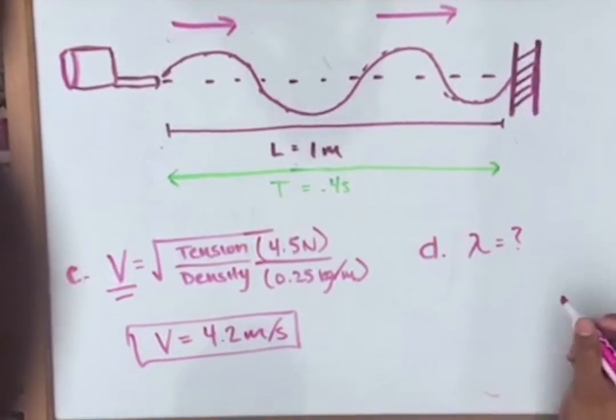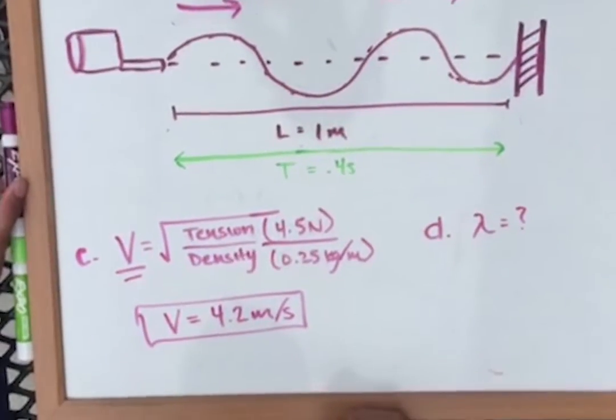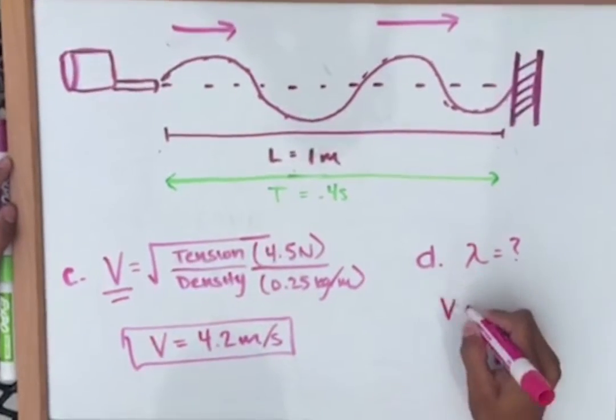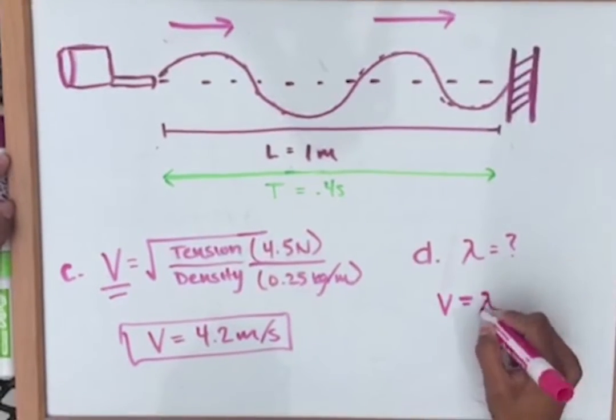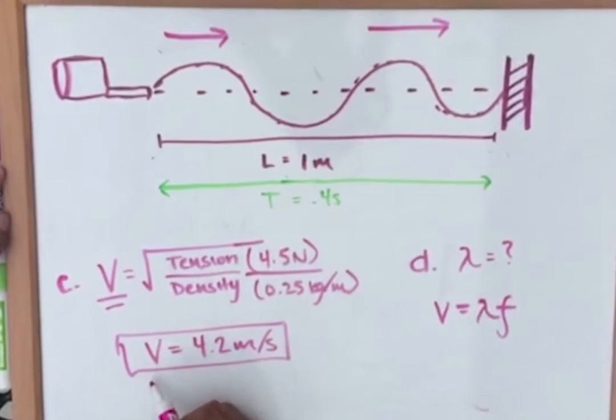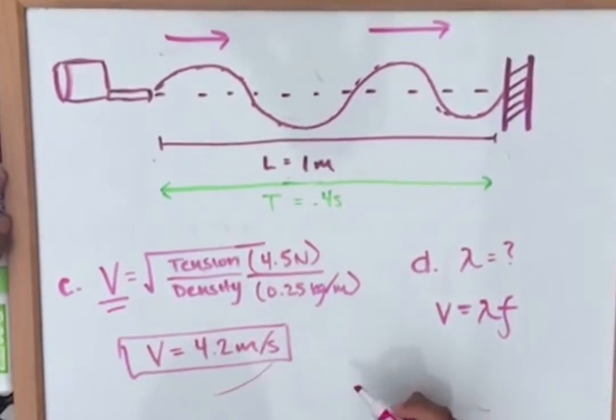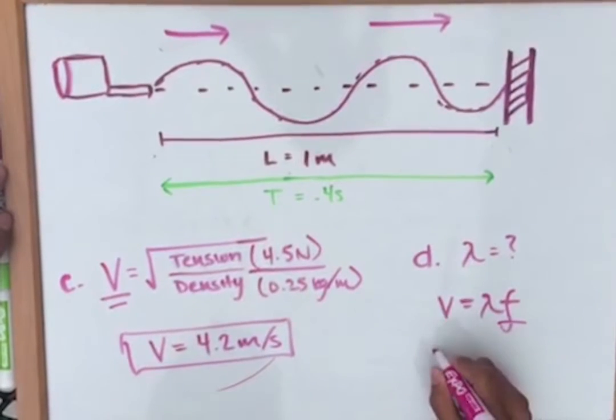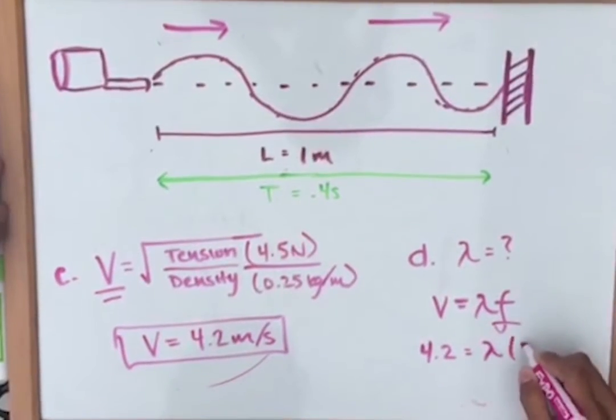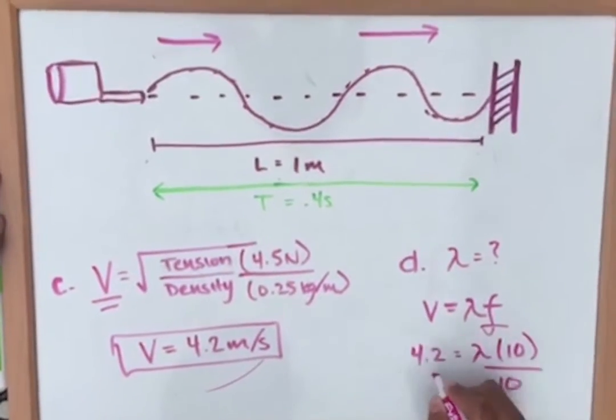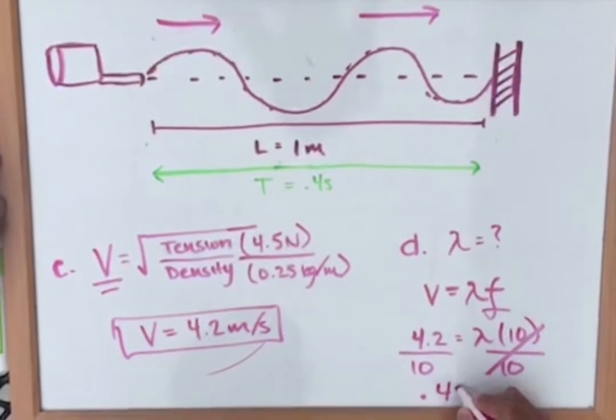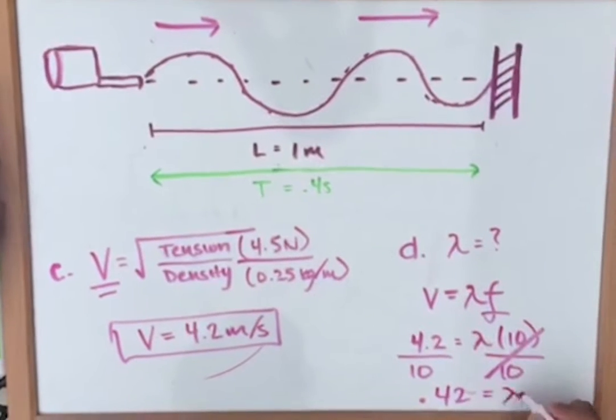For part D, we need to find the wavelength of this string with the given density and tension. So we could use the same equation that we have been using previously of velocity equals lambda times frequency. And we just found velocity, and we already know the frequency, so we could plug those in to find lambda. So in order to find lambda, we need to divide 4.2 by 10, which equals 0.42.